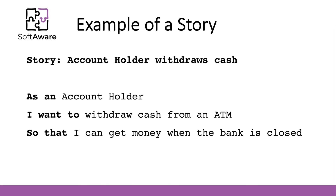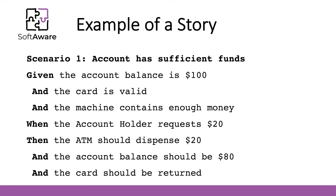Keeping up with the example of a story, we have the story title 'account holder withdraws cash.' Then we have the description: as an account holder, I want to withdraw cash from an ATM so that I can get money when the bank is closed. Scenario one: the account has sufficient funds. Given the account balance is $100, the card is valid, and the machine contains enough money — when the account holder requests $20 — then the ATM should dispense $20, the account balance should be $80, and the card should be returned.